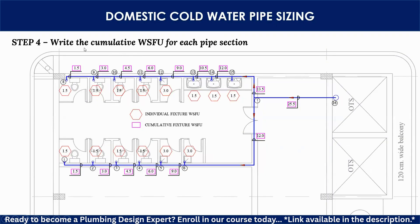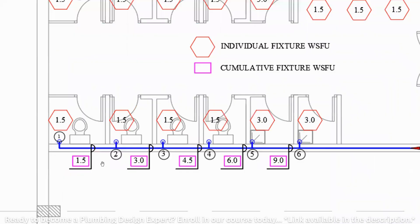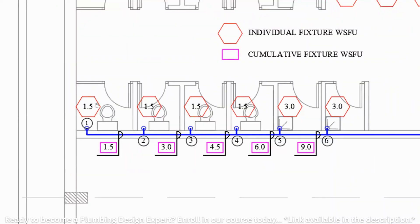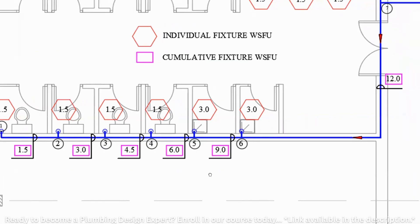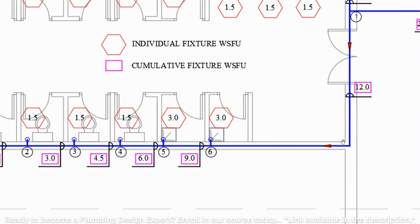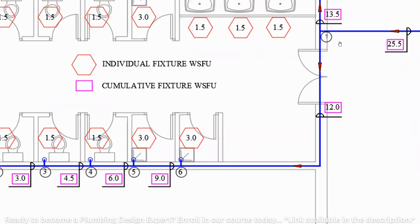Step 4: write the cumulative WSFU for each pipe section. For section 1–2, the WSFU is only 1.5. For section 2–3, it serves two lavatories, so 1.5 + 1.5 = 3. For section 3–4, it serves three fixtures, so 1.5 + 1.5 + 1.5 = 4.5. This is how you add the cumulative WSFU for each section.